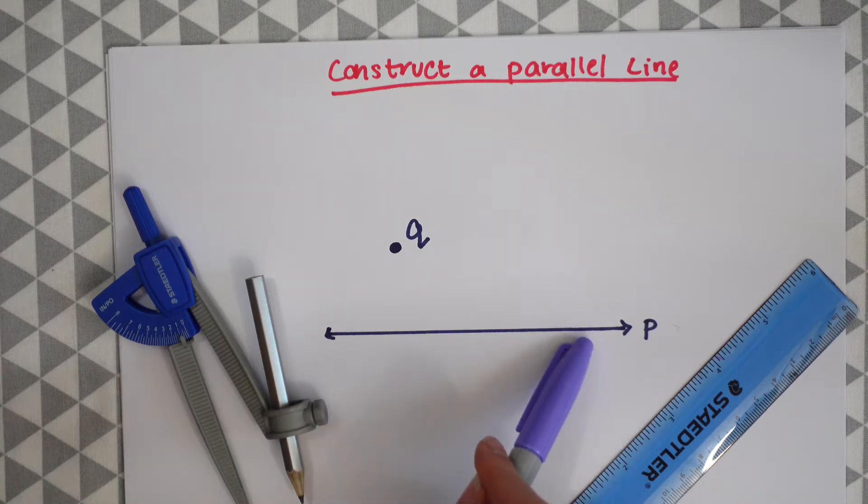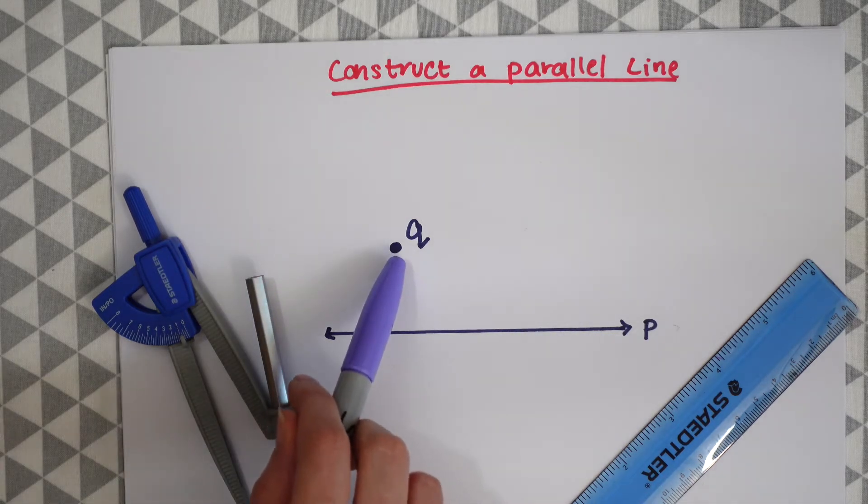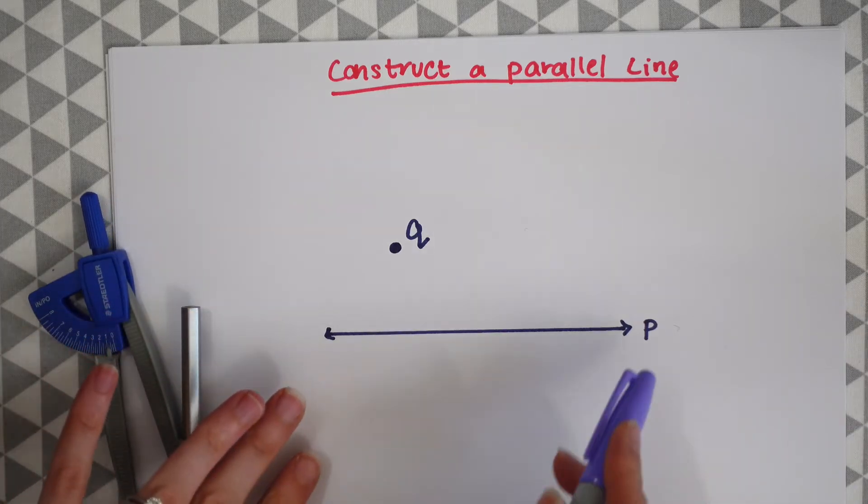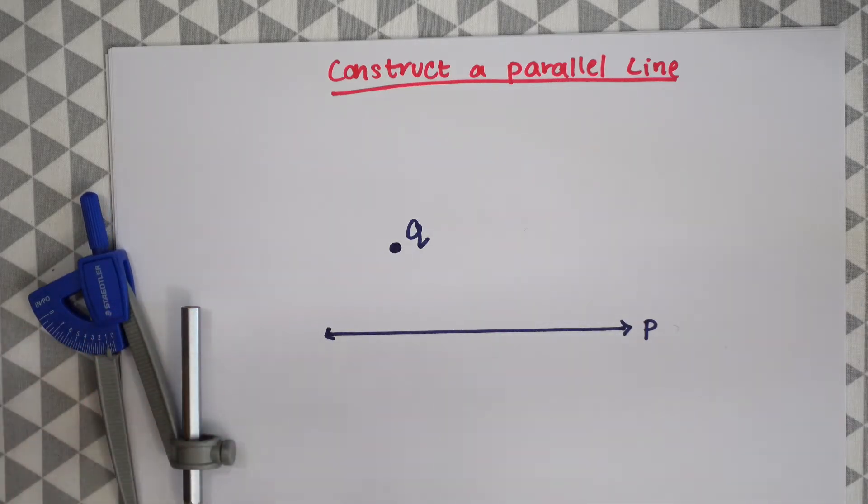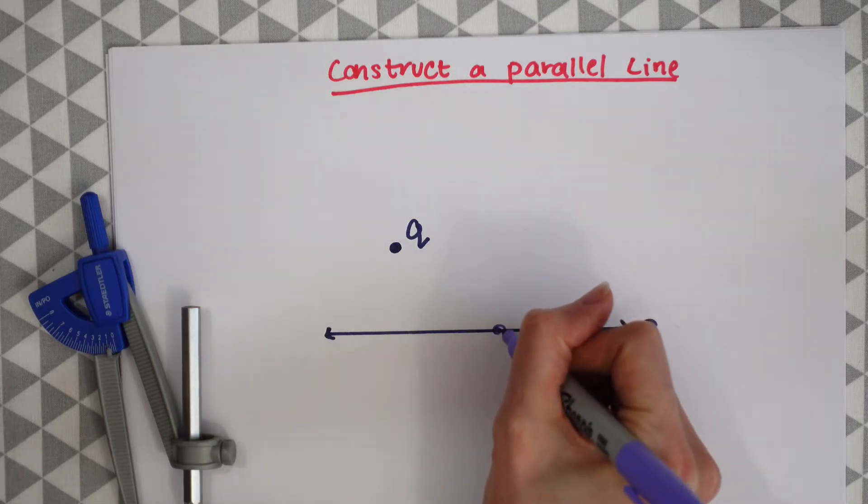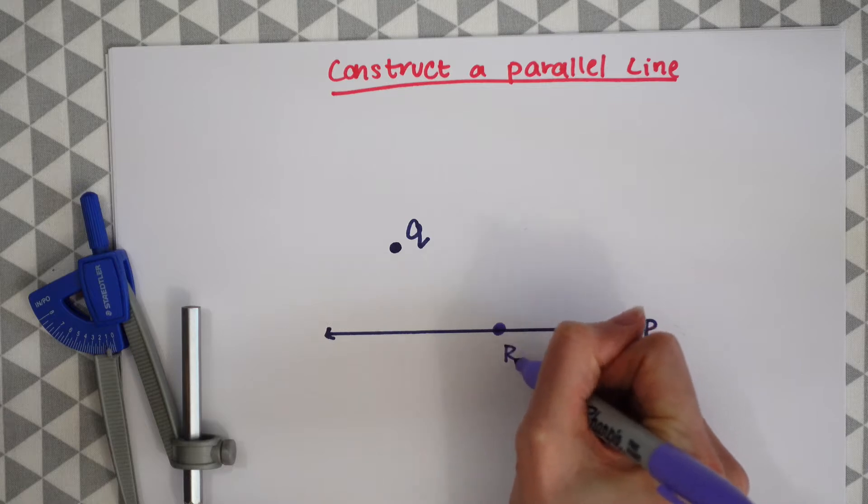So we're given line P and we're given this point Q. The first thing we're going to want to do is actually create another point on line P and this point can be anywhere along line P. So I'm going to put the point right here and call it R.